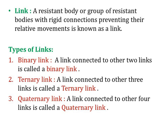Types of links: binary link, ternary link, and quaternary link. A binary link is a link connected to two other links. A link connected to three other links is called a ternary link. A link connected to four other links is called a quaternary link.